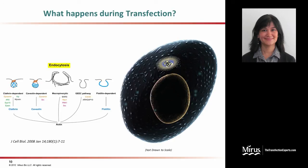It is generally known that clathrin-dependent and caveolin-independent endocytic pathways play a major role in transfection complex uptake. There are also other pathways such as macropinocytosis and others that are involved in transfection.